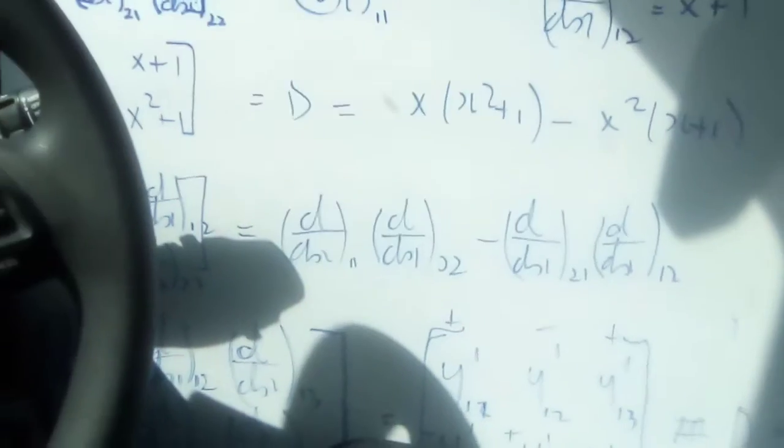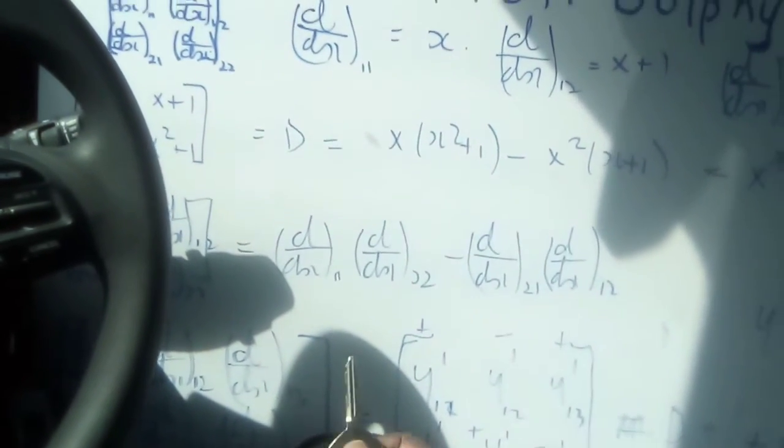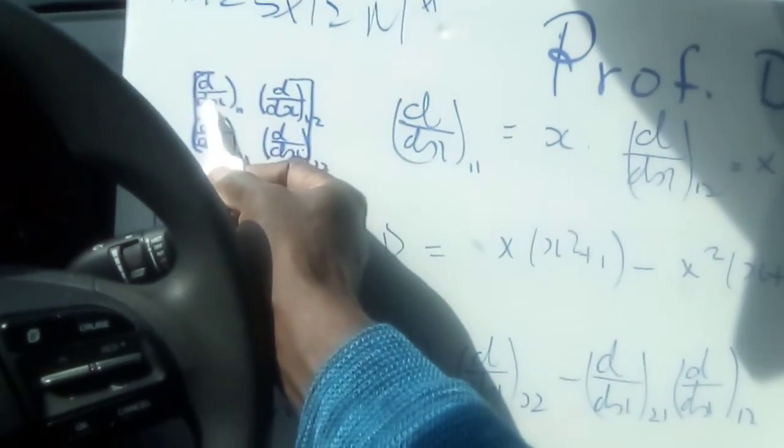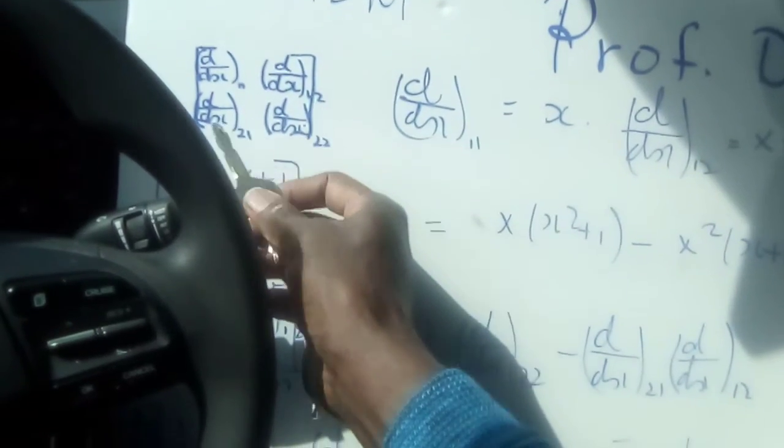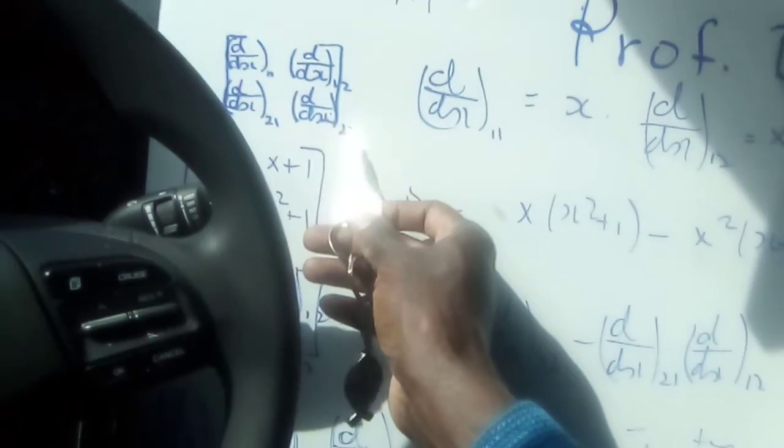We are doing an exercise in differentials. For the elements of the matrix, we have d by dx for r11, d by dx for r12, and d by dx for r21, and d by dx for r22.